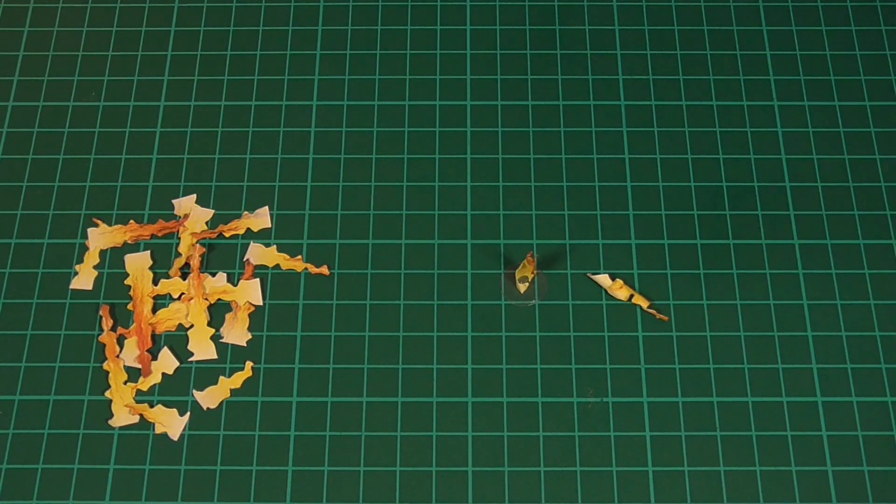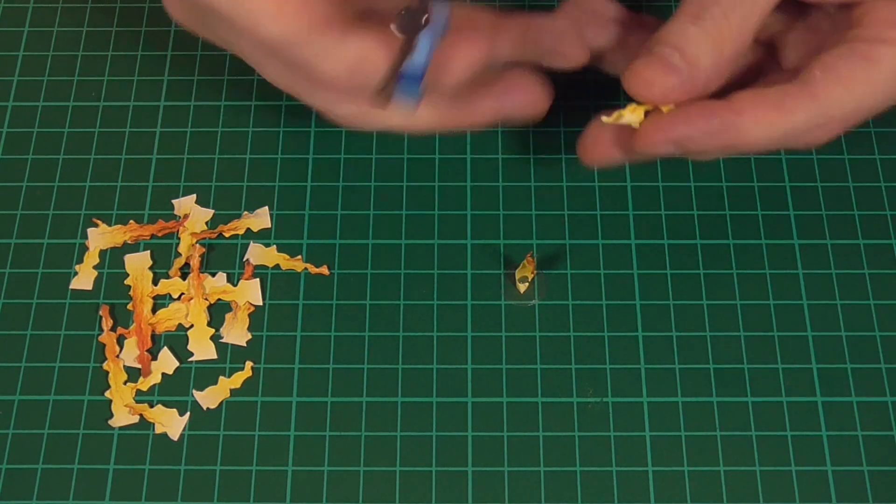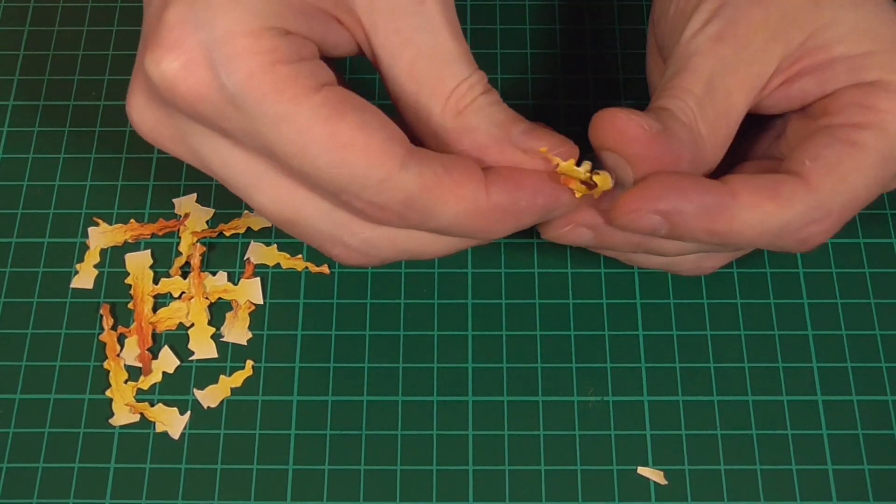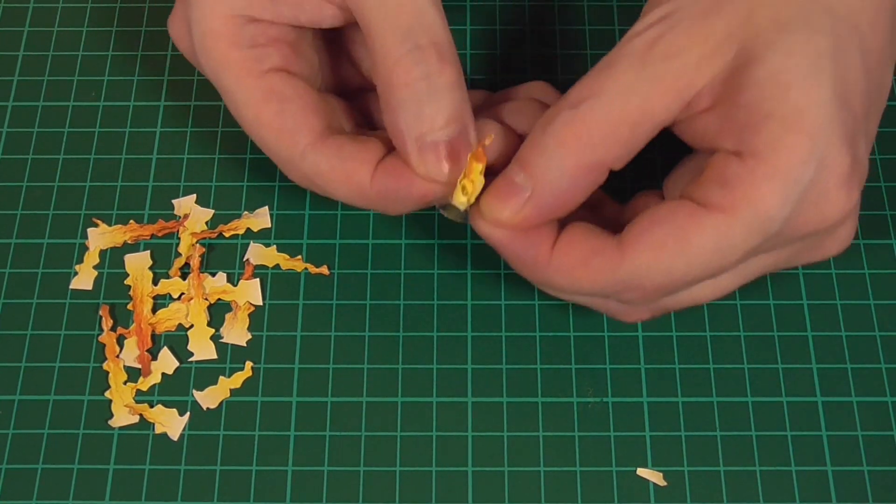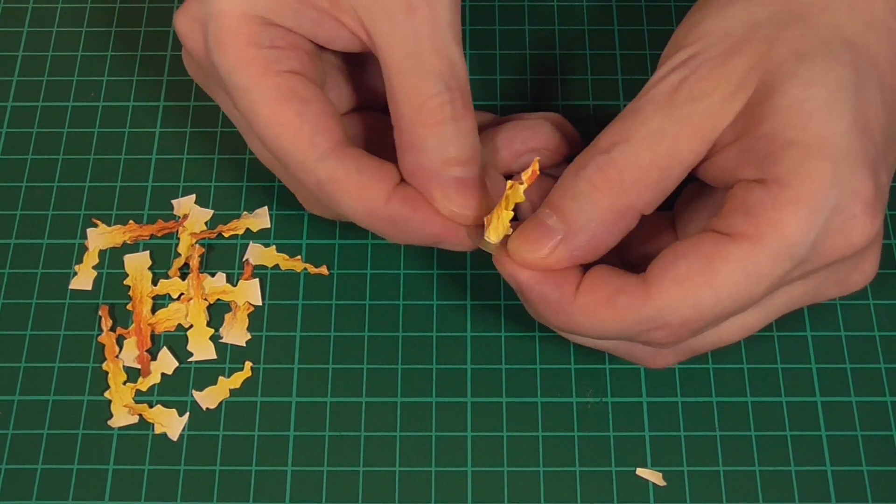Next we'll take another flame that's roughly the same size and do the exact same thing again. However, when gluing it into place I like to try and position it so that it's kind of entwined with the first piece. Basically we're aiming to get it looking something like this.